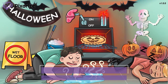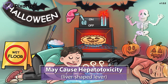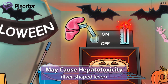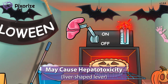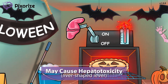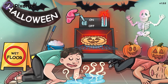The lever that turns on the oven broke at the Halloween party. Notice how the lever handle is in the shape of a liver. Here at Pixarize, we use this liver-shaped lever to symbolize liver damage or hepatotoxicity. Halothane can cause liver damage, so it's best to monitor those liver enzymes like AST and ALT.